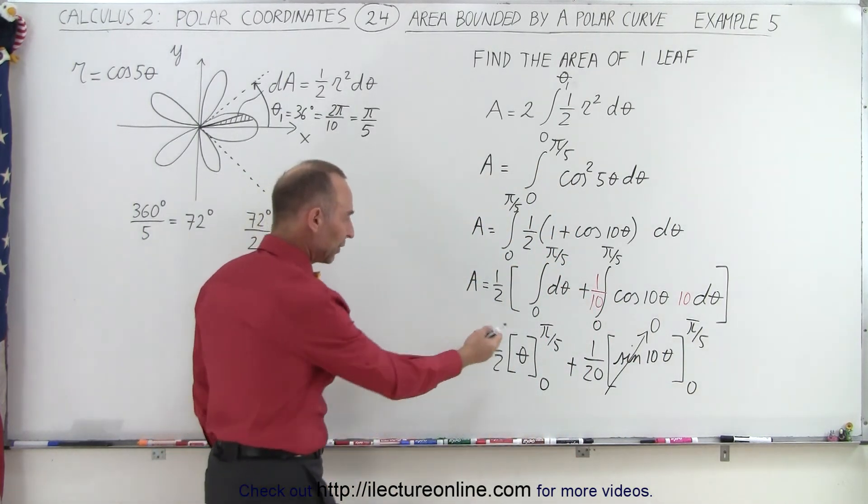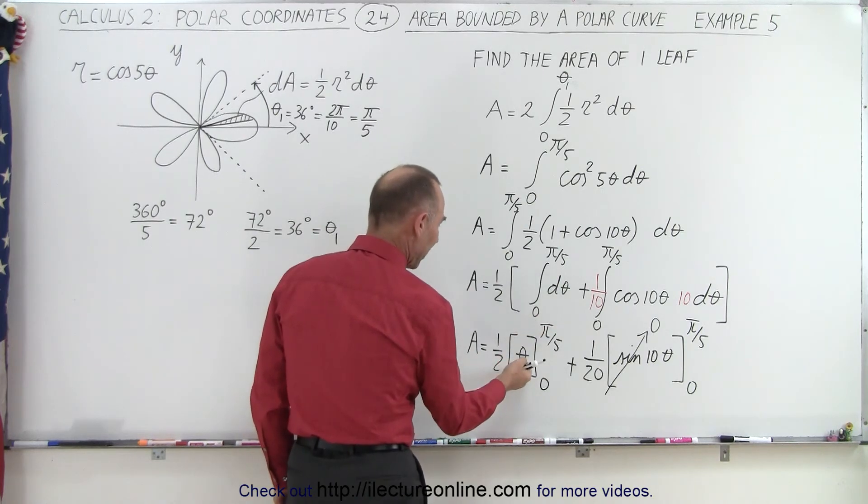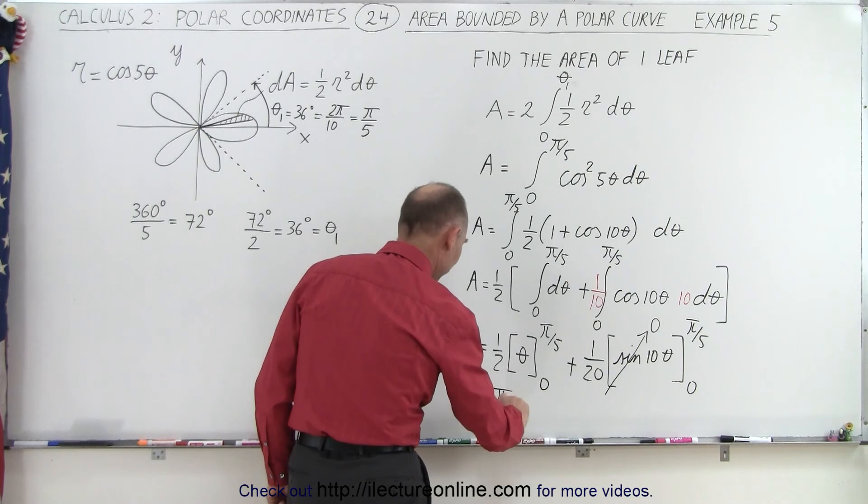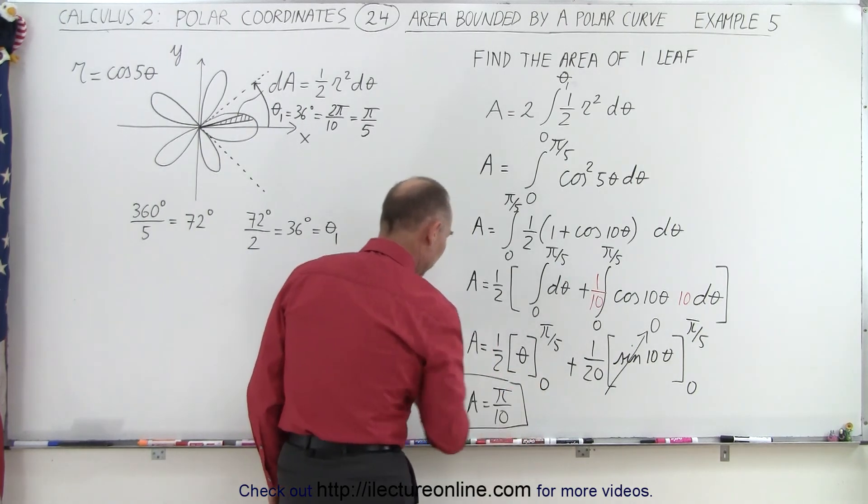Don't have to worry about that. And over here, we have pi over five divided by two, so we have the area being equal to pi divided by 10.